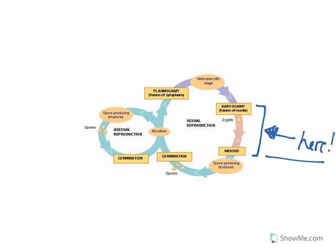When two haploid nuclei fuse, it would obviously create a diploid nucleus, and that's one of the zygote forms. This zygote actually automatically goes straight into meiosis, and right after meiosis it is again haploid. So it's a very, very short period of time — at least in terms of this chart — that fungi are actually diploid.